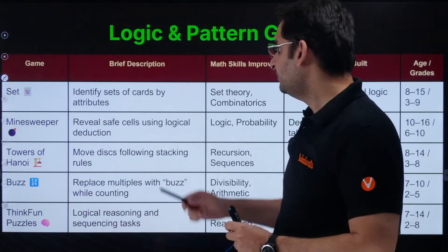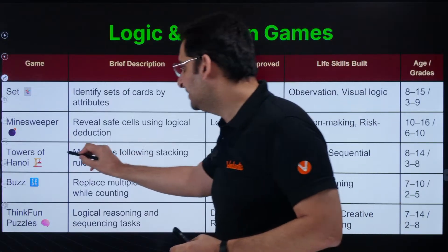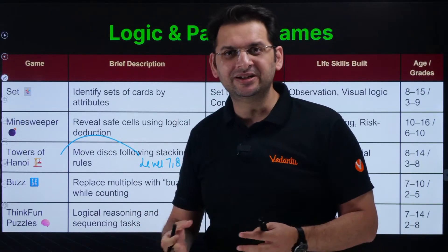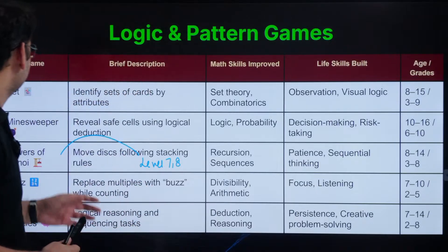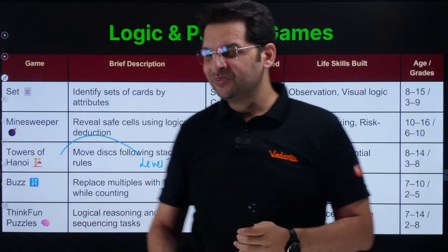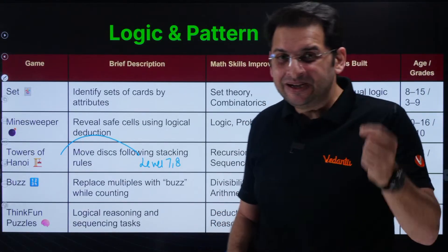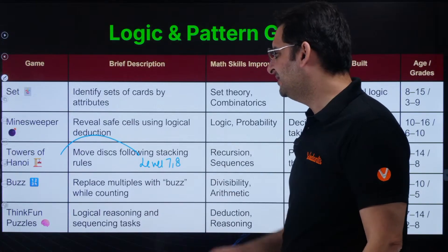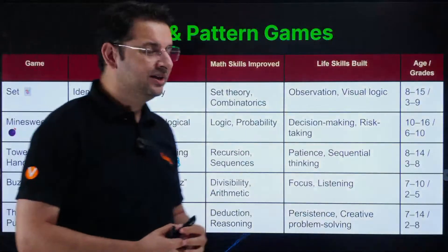Then there are logic and pattern games: Set, Minesweeper, Tower of Hanoi, Buzz, and ThinkFun Puzzles. We play these at level 7 and level 8. Tower of Hanoi is not just a game — it's a problem, and we try to solve it using recurrence and other methods at level 7 and level 8. The real mathematical idea behind the Tower of Hanoi you are able to understand when you grow up. Minesweeper is a very common game. There are a lot of games in ThinkFun Puzzles, and these all build important life skills.